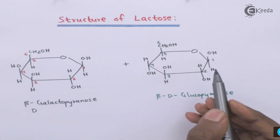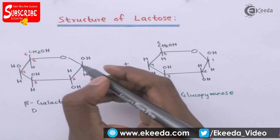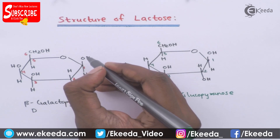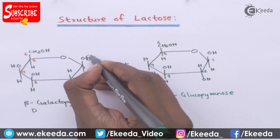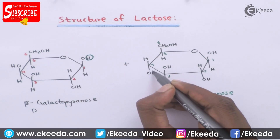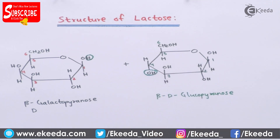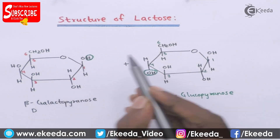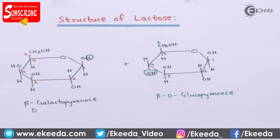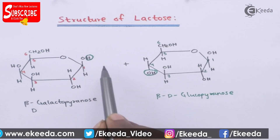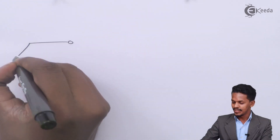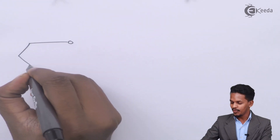When beta-D-glucopyranose is combined with beta-D-galactopyranose, a beta glycosidic linkage is formed. The H from one unit takes away the OH from the other to form water, and the beta glycosidic linkage is formed. This gives us the structure of lactose.